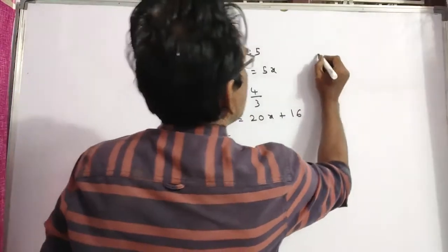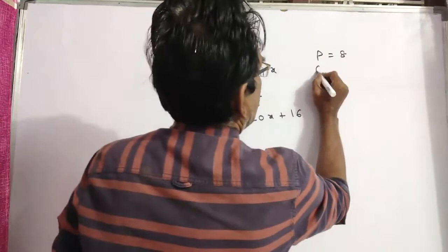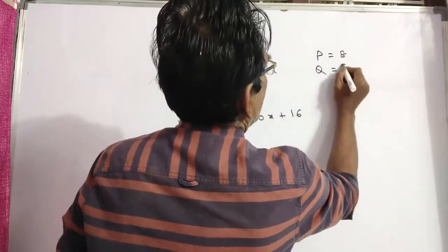So, P's present age, 8 into 1, 8. Q's present age, 5 into 1, 5.